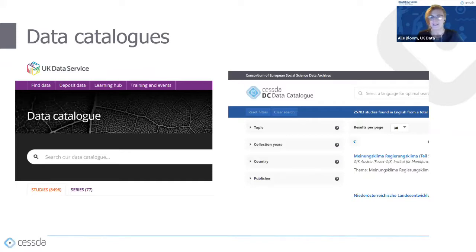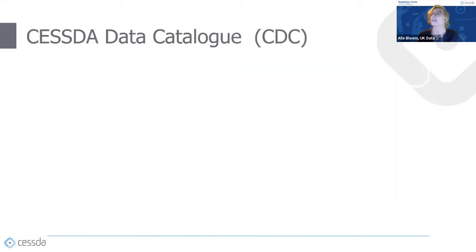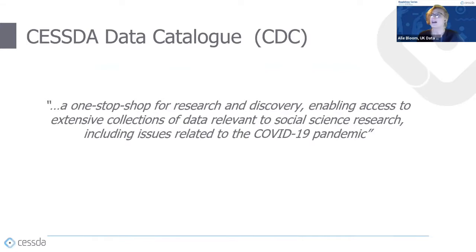Finally, we have data catalogs. Data catalogs index specific selections of data resources and usually contain metadata, documentation, and information on how or where to download and access the data. Examples include the UK Data Service and the CESDA data catalog. The CESDA data catalog is the main data catalog for Europe, described as a one-stop shop for research and discovery, enabling access to extensive collections of data relevant to social science research, including issues related to the COVID-19 pandemic.